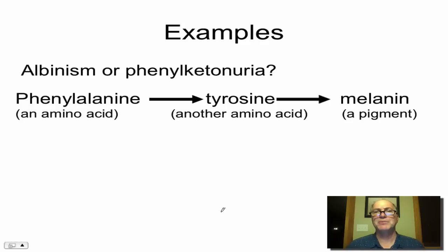Now let's look at a real example, one that you heard about in the video you watched last. Albinism or phenylketonuria. Here's a very short pathway. Phenylalanine is an amino acid that we get in our diet, but phenylalanine can be converted into tyrosine by this enzyme, which is called phenylalanine hydroxylase.